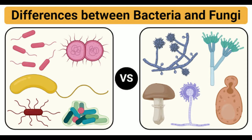Fungi are essential organisms as most of them are used for the extraction of antimicrobial products for pharmaceutical industries. Similarly, some fungi are edible and can be used as a source of food. Basis for comparison — Bacteria vs. Fungi: Bacteria are single-cell microscopic organisms characterized by the presence of an incipient nucleus and few membrane-less cell organelles. Fungi (singular fungus) are eukaryotes characterized by the presence of chitin in the cell wall.